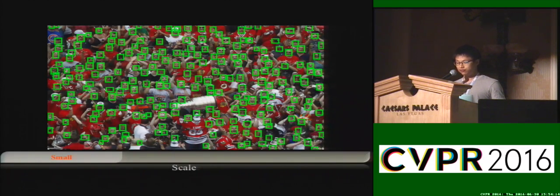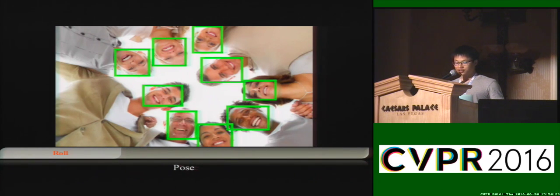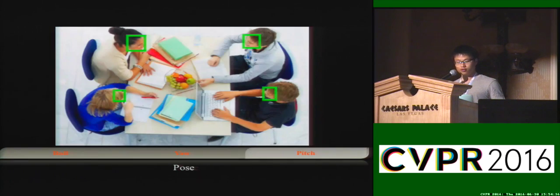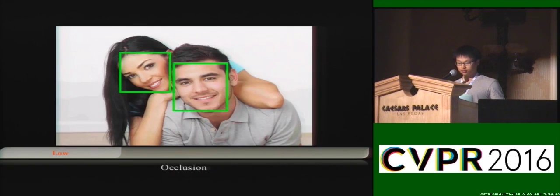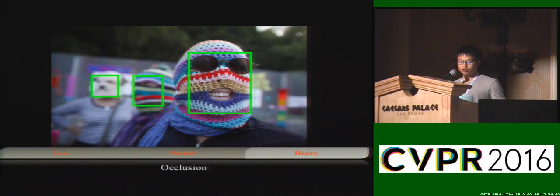Next, let's have a preview of WiderFace. The WiderFace dataset has large variations in scale — it contains small faces, medium faces, and large faces. WiderFace also has large variations in pose across three dimensions: roll, yaw, and pitch. We explicitly collected samples to cover a wider degree of occlusions, including non-occlusion, partial occlusion, and heavy occlusion.